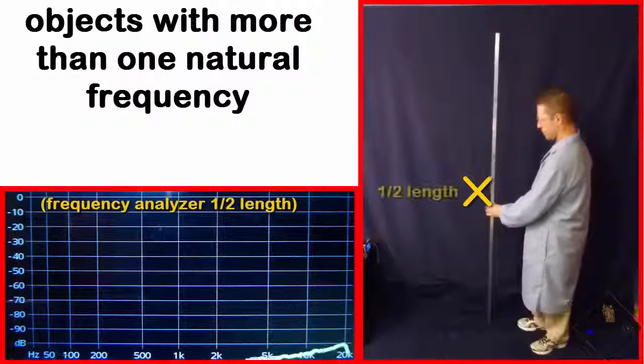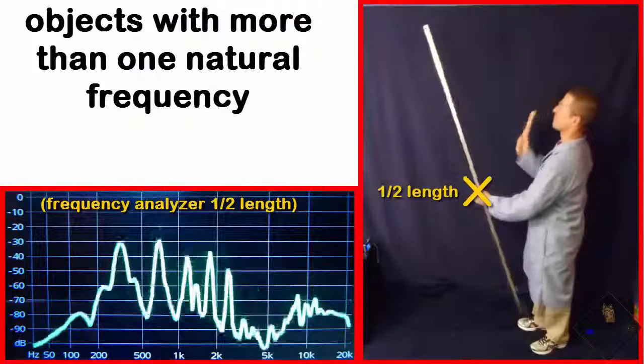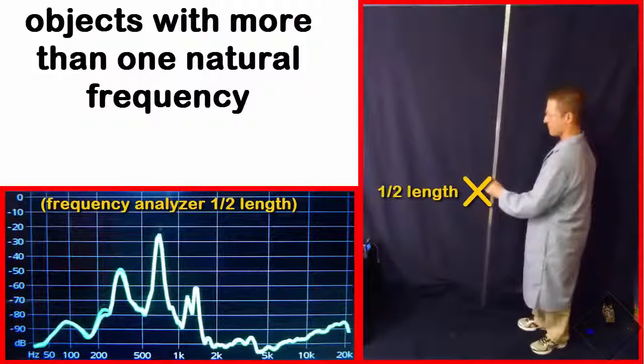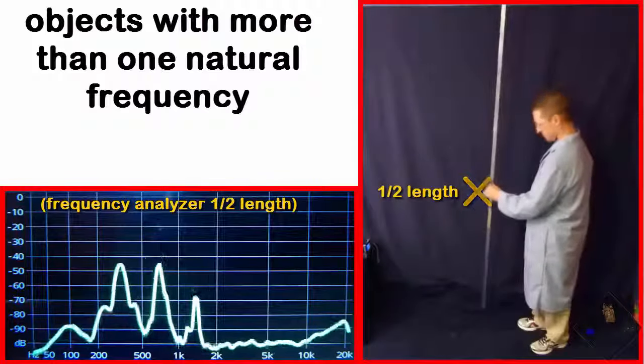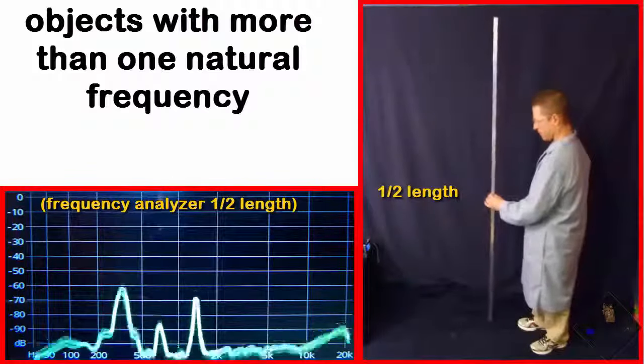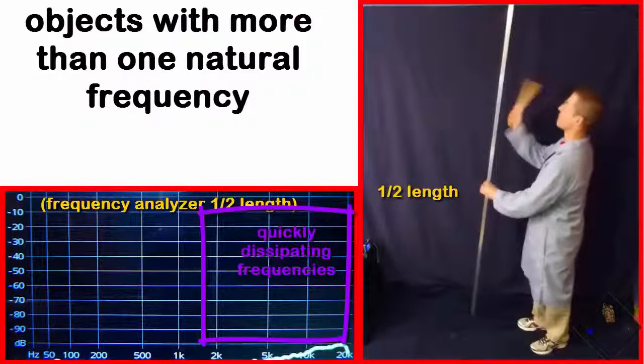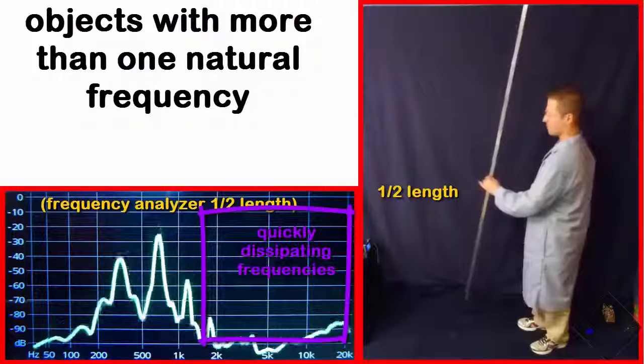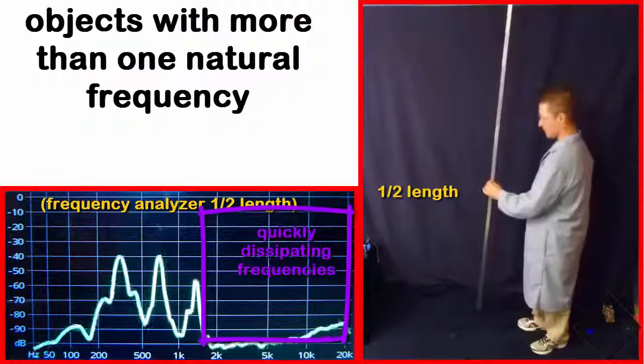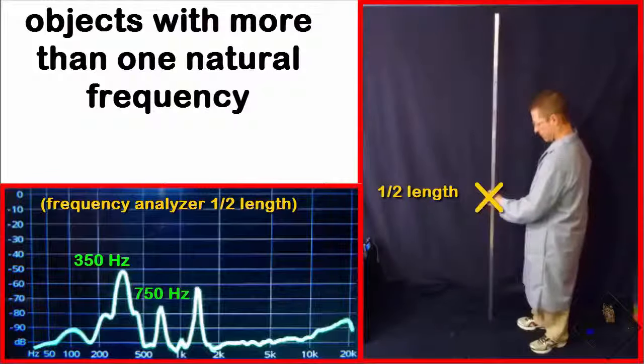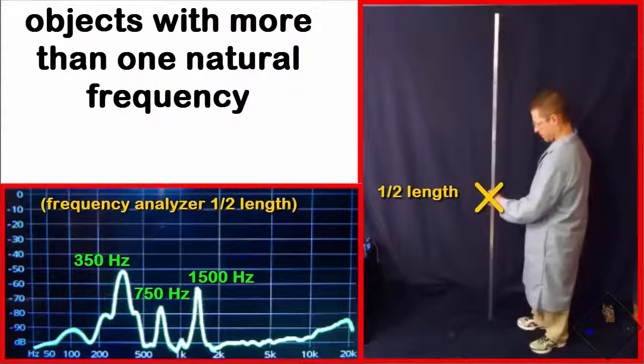Holding the tube at its exact center position, the tube is struck and the resonant frequencies detected are shown on the frequency analyzer. Notice that many frequencies quickly dissipated, leaving only a few surviving resonant frequencies at 350, 750, and 1500 Hz.